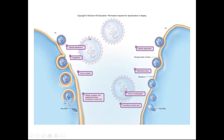Here we can see a virion particle binding — we have attachment, absorption or engulfment — and then the virion particle releases its genetic information. On this other side, instead of endocytosis, the virion particle merges with the cell membrane and dumps its genetic information directly into the cell.